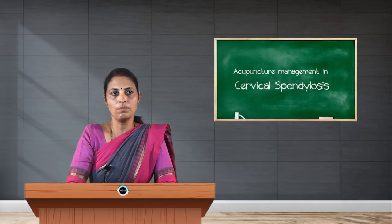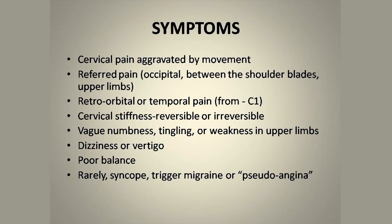Looking at the symptoms: cervical pain aggravates by movement. There will be referred pain especially to the occipital area, shoulder blades, and upper limb. Based on the nerve or dermatome involved, pain may appear on the outer aspect of the upper arm, on the forearm, or may radiate to the fingers. Cervical stiffness is also associated, which may be reversible or irreversible. Vague numbness, tingling sensation, or weakness in the upper limb and sometimes dizziness or a feeling of vertigo.